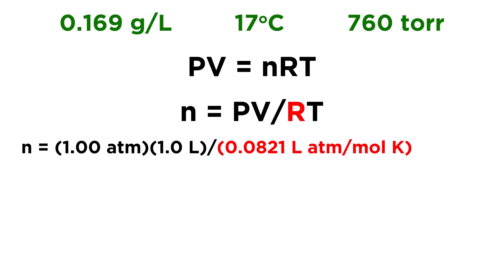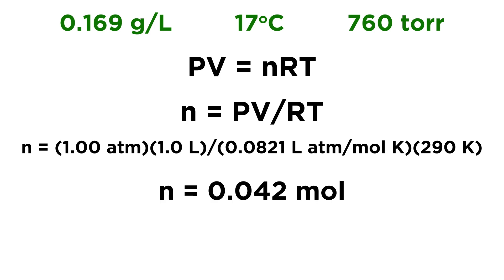Then we're going to divide by R, the gas constant. In this case it's going to be 0.0821 liters atmospheres per mole Kelvin. Then we have temperature — 17 degrees Celsius — but we always want to express temperatures in Kelvin when we do calculations. So that will be 273 plus 17, which is 290 Kelvin. Doing the arithmetic, we get 0.042 moles of gas.